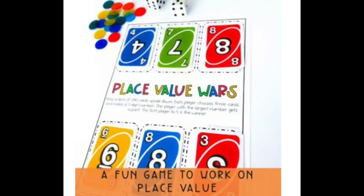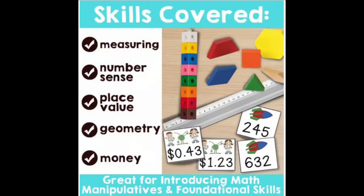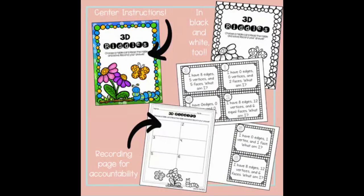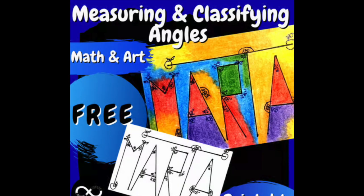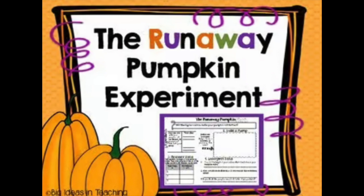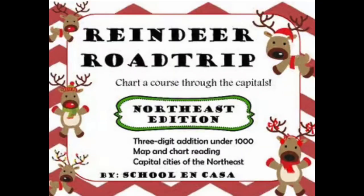The next set of freebies is for math centers. We've got a cute place value game with UNO cards, a back-to-school math center with a set of center activities, some geometry shape riddles, and a counting coins memory match game. The next set is some math integration activities — pairing math with a different subject. The first is a types of angles name art activity, which is a really fun way to get kids engaged in math. The next is a STEM experiment using pumpkins and math, super cute and fun for fall.